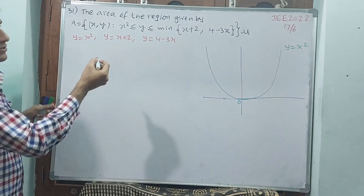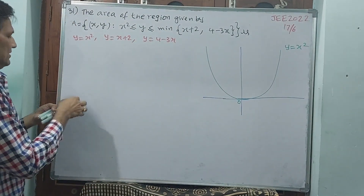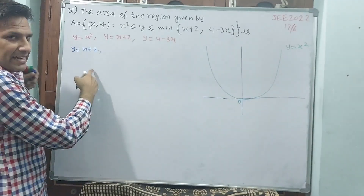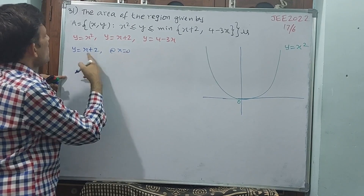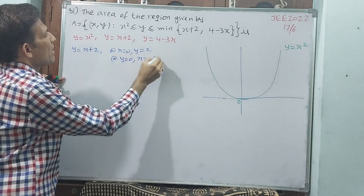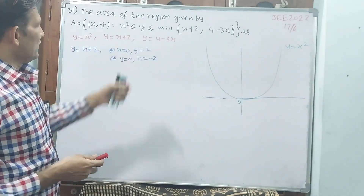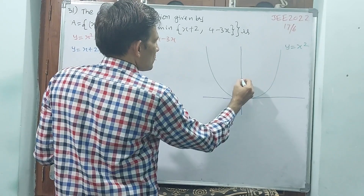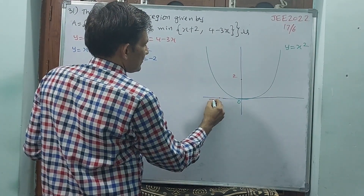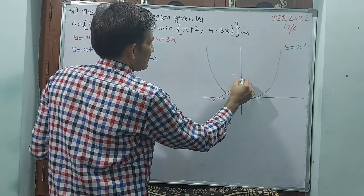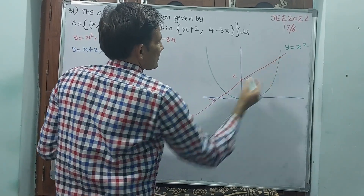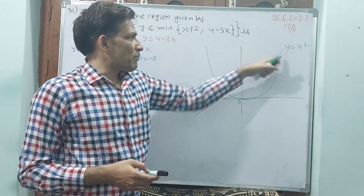Now go for y = x+2. This is a line. At x = 0, y = 2. At y = 0, x = −2. Let me draw these intercept points. Both curves are touching at certain points — we will find where they intersect.